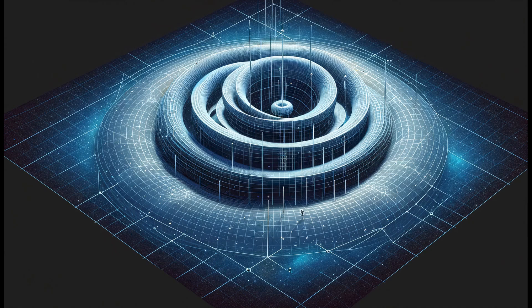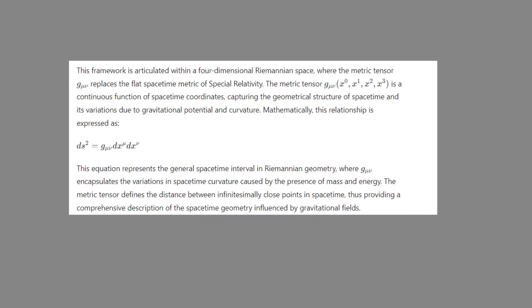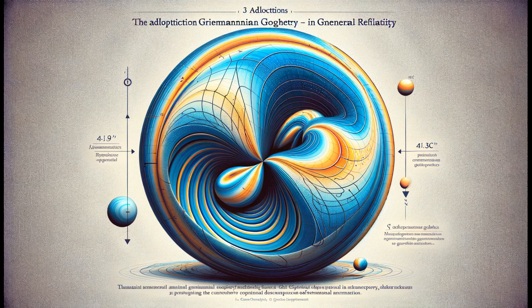In special relativity, flat Minkowski spacetime is sufficient for inertial frames and weak gravitational fields. However, the existence of strong gravitational effects requires the use of Riemannian geometry to describe the curvature of spacetime. Einstein's general relativity exploits this framework, in which the metric tensor varies with the distribution of mass and energy, giving rise to the curvature of spacetime. The Einstein field equations govern these relationships, providing a set of non-linear partial differential equations relating the metric tensor to the stress-energy tensor that encapsulates energy, momentum, and stress in spacetime.